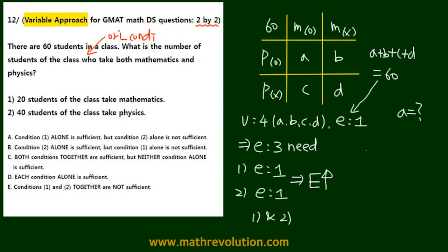So we want to know what A is right now. But what they tell us is A plus C is equal to 20, and A plus B is equal to 40. And from A plus B plus C plus D equal to 60, we can't solve for A with these 3 equations. We need 4 equations, but we only have 3 right now. That's why E is going to be the answer.